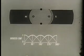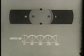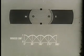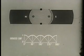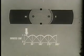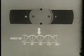However, even with two loops and four commutator segments, the rectified curve is still somewhat irregular.